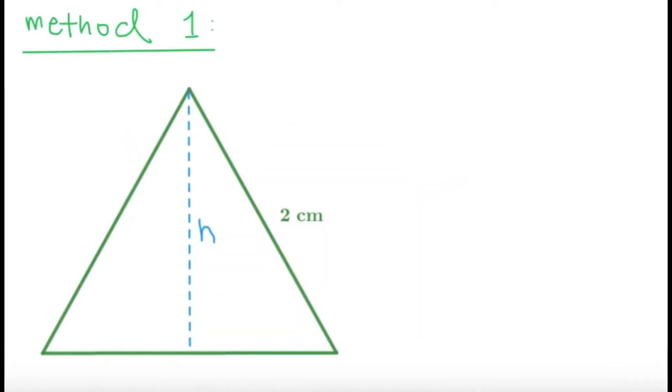So for method 1, we're going to draw the height and we're going to try to get what's the value of this height. Now the reason why we want to draw the height is because, well, I mean the given side length is 2, but it's obvious enough that this side is 2 and this side is obviously 2 as well. But thanks to symmetry in the equilateral triangle, we know that this height is going to split this segment, which is 2 centimeters, into two equal parts of 1 and 1.